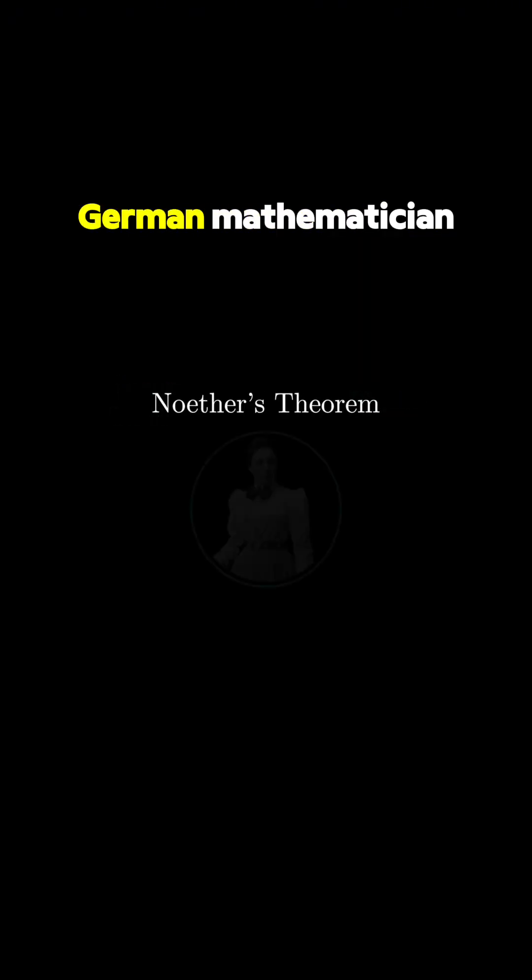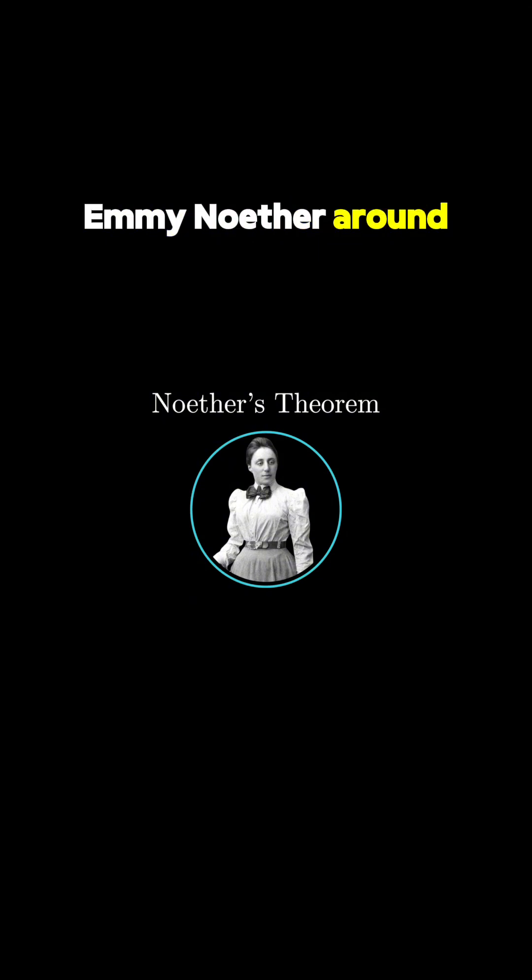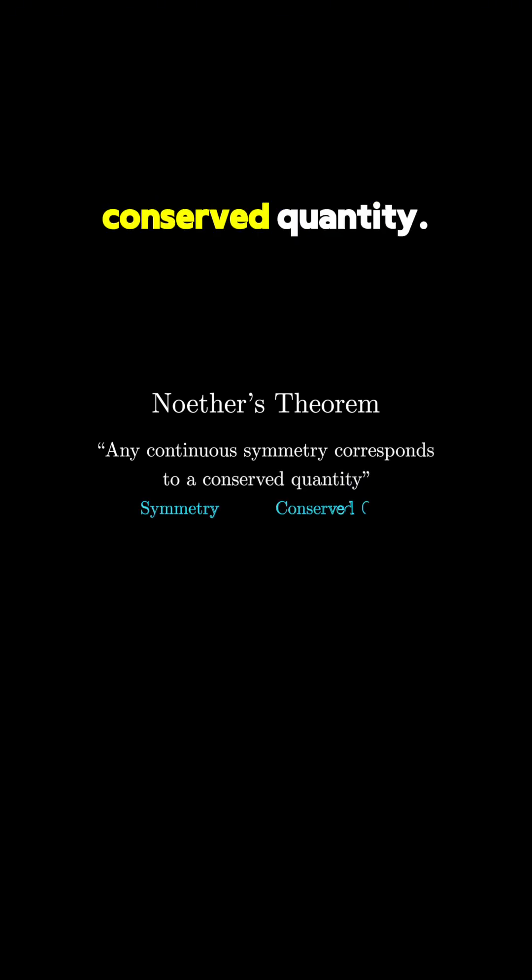This theorem was formulated by the German mathematician Emmy Noether around 100 years ago. It states that for any continuous symmetry that you can find in a theory, there will always be a corresponding conserved quantity.